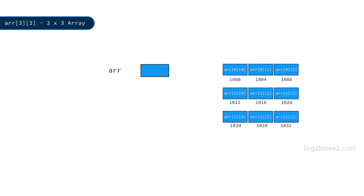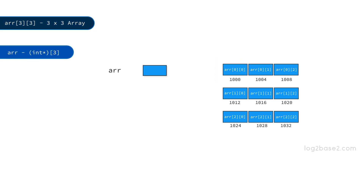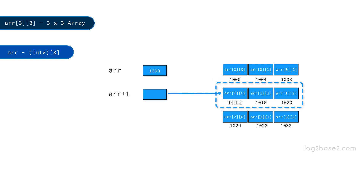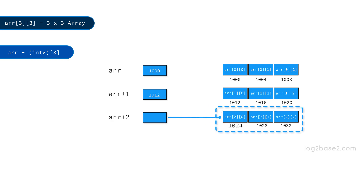Now let us understand about ARR. ARR is a pointer to the first 1D array. The 1D array has 3 elements, so ARR is of type int(*)[3], meaning ARR is a pointer which points to an array of 3 integers. The first row's base address, 1000, is stored in ARR. Since ARR is a row pointer, moving ARR by one position points to the next 1D row. So ARR + 1 will be the base address of the second row, i.e. 1012. Similarly, ARR + 2 will point to the third row and will have the address 1024.